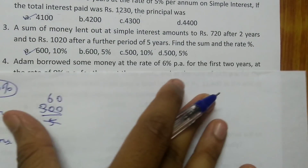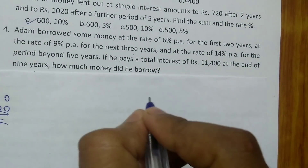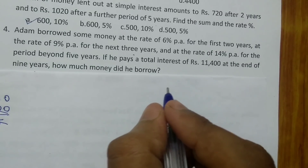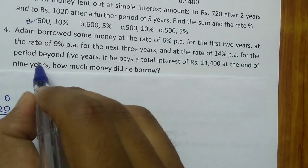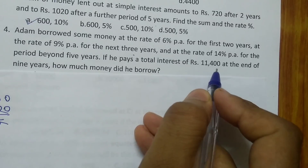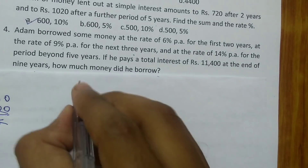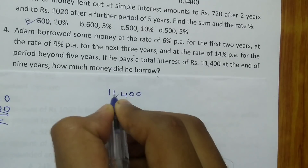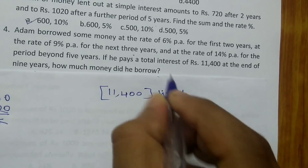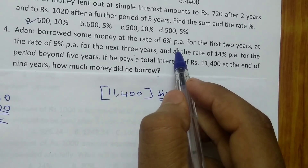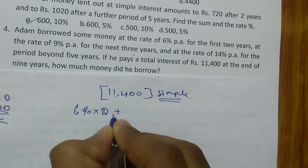The last question: Adam borrowed some money at the rate of 6% per annum for the first 2 years, at 9% per annum for the next 3 years, and at 14% per annum for the period beyond 5 years. He pays a total interest of Rs.11400 at the end of 9 years. For the first 2 years: 6% into 2 = 12%.